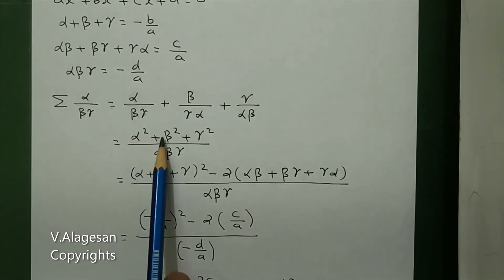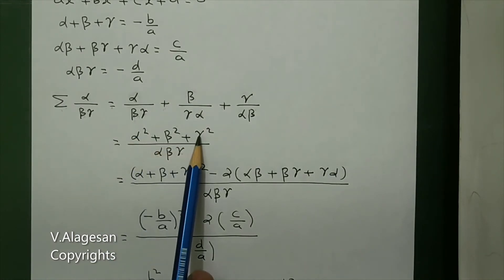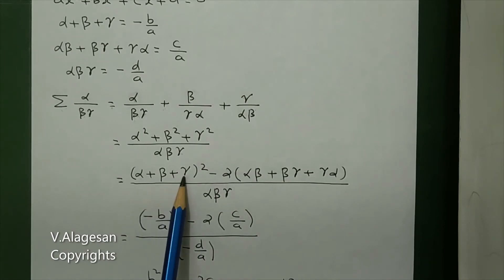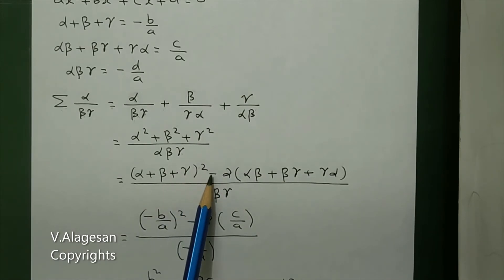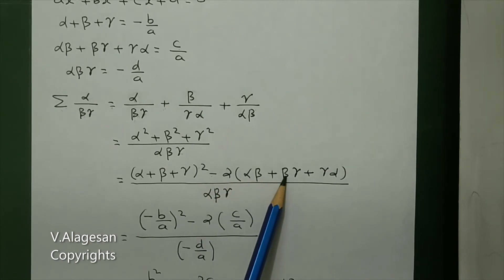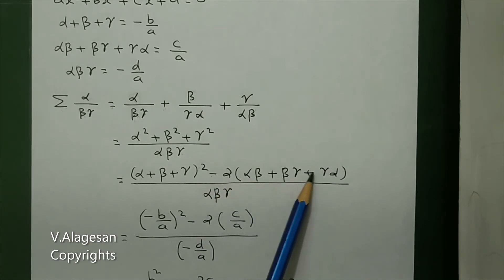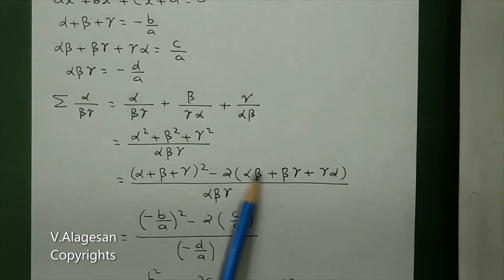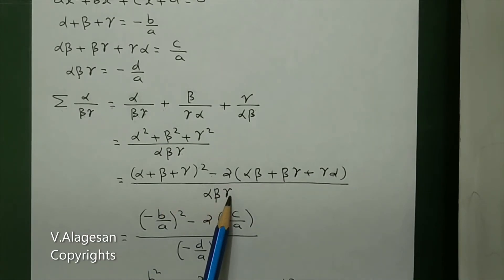Now, alpha squared plus beta squared plus gamma squared equals alpha plus beta plus gamma whole square minus 2 into (alpha beta + beta gamma + gamma alpha), all divided by alpha beta gamma.